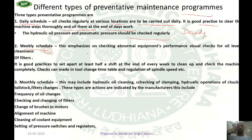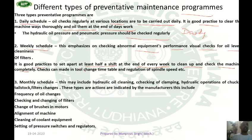Next is the weekly schedule. This emphasizes checking normal equipment performance, visual checks for oil level, and cleanliness of filters. It is good practice to set aside at least half a shift at the end of every week to clean and check the machine completely. Also check for wear and tear in tools and change them if needed, and check the timetable and regulation of spindle speed.